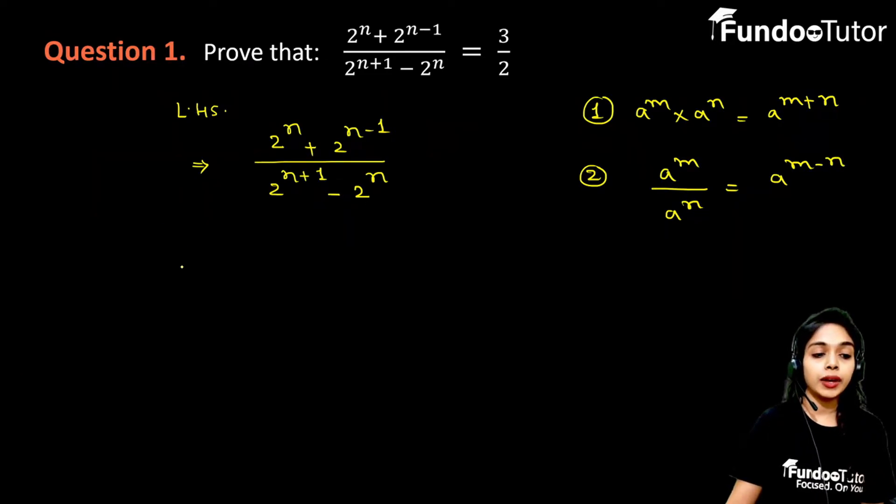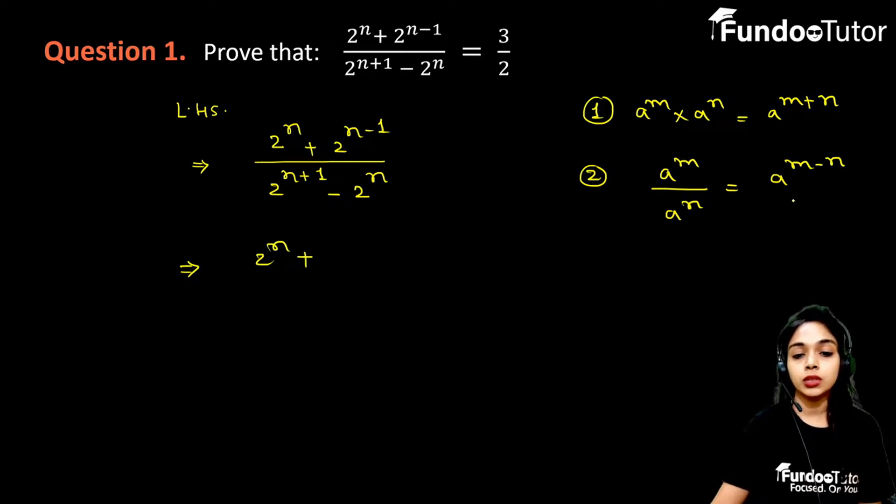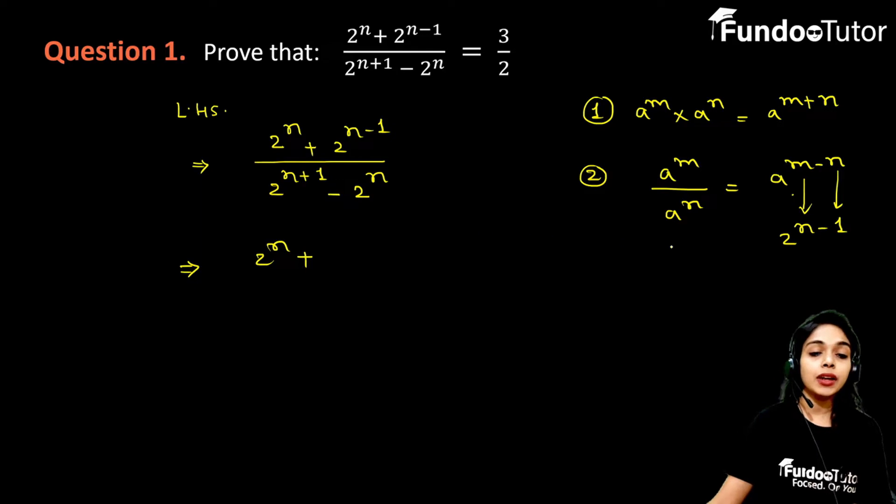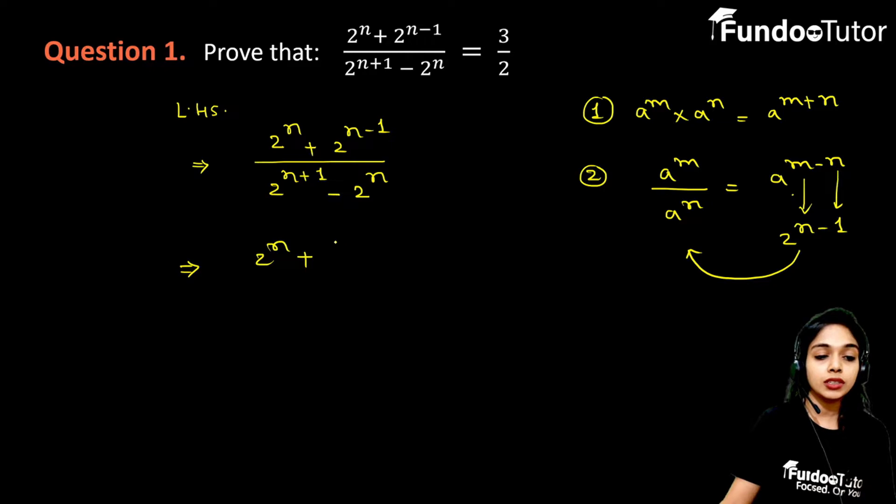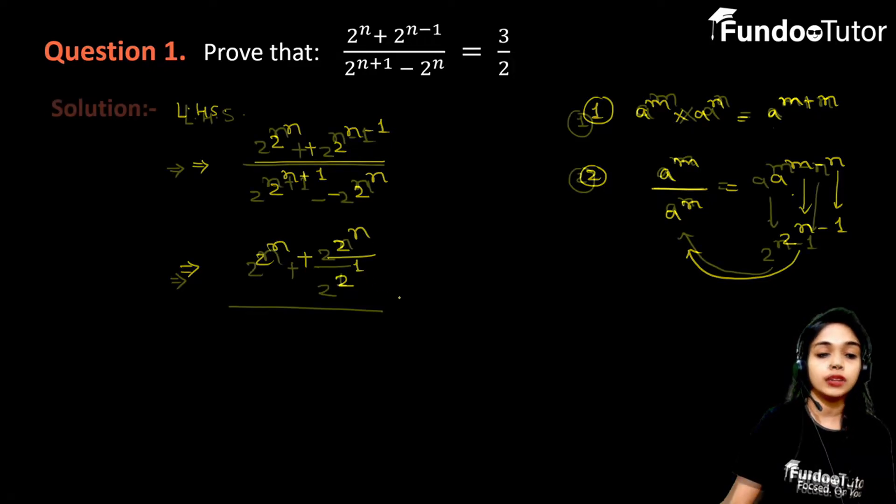Now we will apply quotient law in the numerator. When you compare with quotient law, then m is n and n is 1. So we have to write this 2 to the power n minus 1 as 2 to the power n divided by 2 to the power 1.